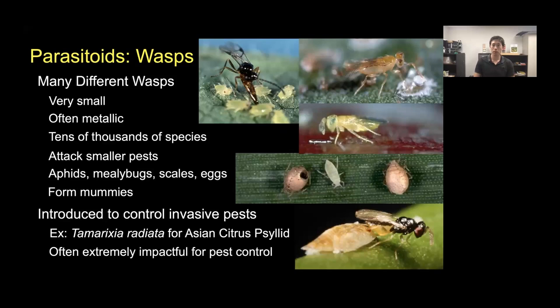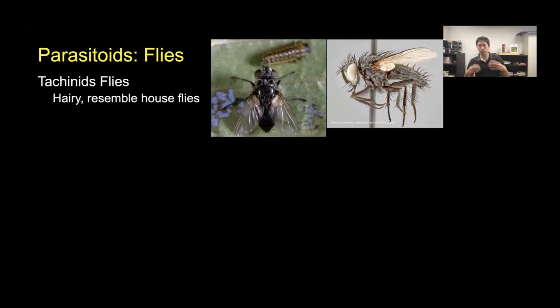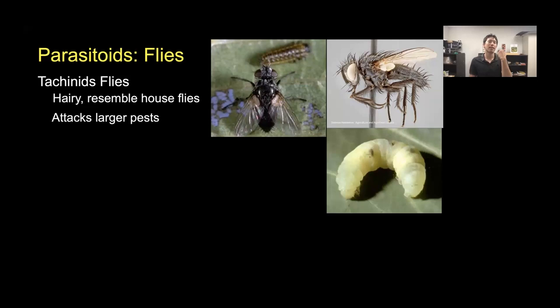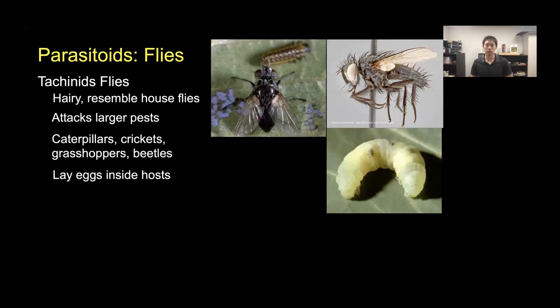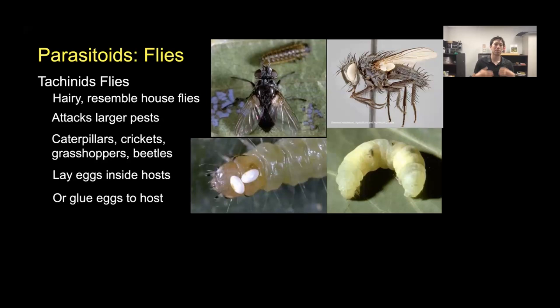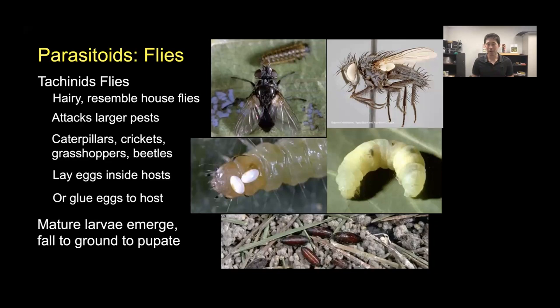Tachinid flies are another type of parasitoid. They're decently large, hairy, and resemble house flies. They attack larger pests like caterpillars, crickets, grasshoppers, and beetles. Tachinid flies either lay eggs inside the host—visible as dark sections on the caterpillar—or glue eggs directly to the host's exterior. Larvae hatch and burrow in, consuming the host from within. Once the larvae have eaten their fill and killed the host, they emerge, drop to the ground, and pupate into brown cigar-shaped pupae.